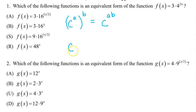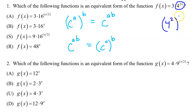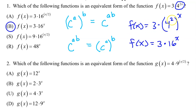So if we are given c and then the exponent is a product like a times b, we should be able to rewrite this as c to the a, all raised to the b. In the same way, we should be able to rewrite 4 to the 2x power as 4 squared, all raised to the x power. Then just bring down that 3. 4 squared is 16, so we end up with 3 times 16 to the x power, and the answer is B.